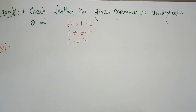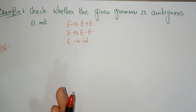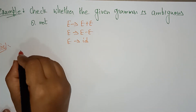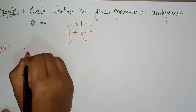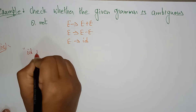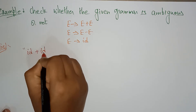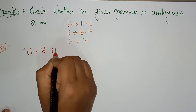Hi students, welcome back. Let me take another example to explain whether the given grammar is ambiguous or not. From the above grammar, I am just taking the string like id plus id minus id.